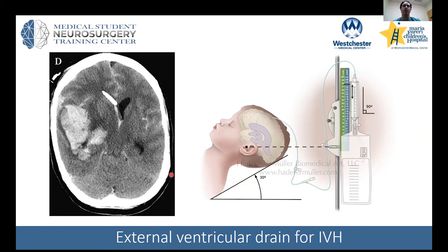The treatment is placement of an external ventricular drain, something you can do as an intern at the bedside. We use anatomical landmarks to guide the incision and catheter placement. A small incision is made in the right frontal area — we choose the right side because most people, even left-handed, have language on the left, and staying frontal keeps you away from the motor strip. You make a small opening in the skull, open the dura, and pass the catheter into the ventricle. It is then tunneled under the skin and attached to a drainage bag at the bedside.